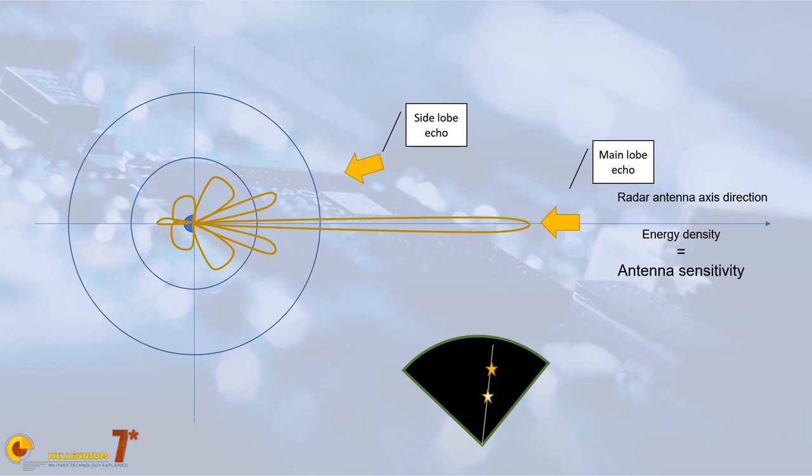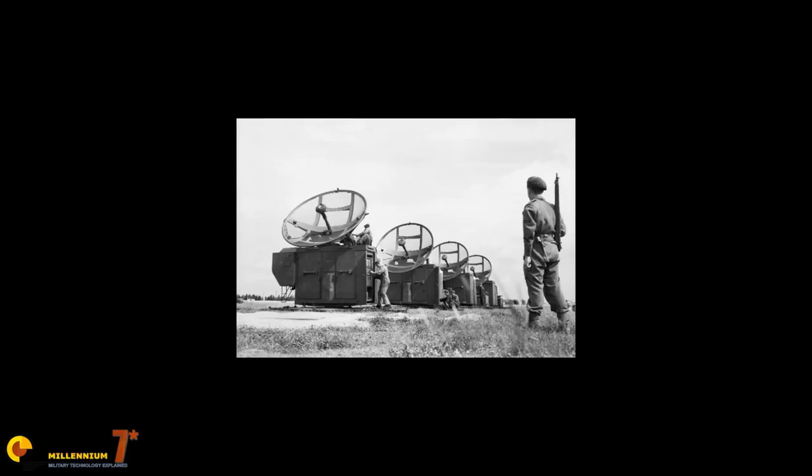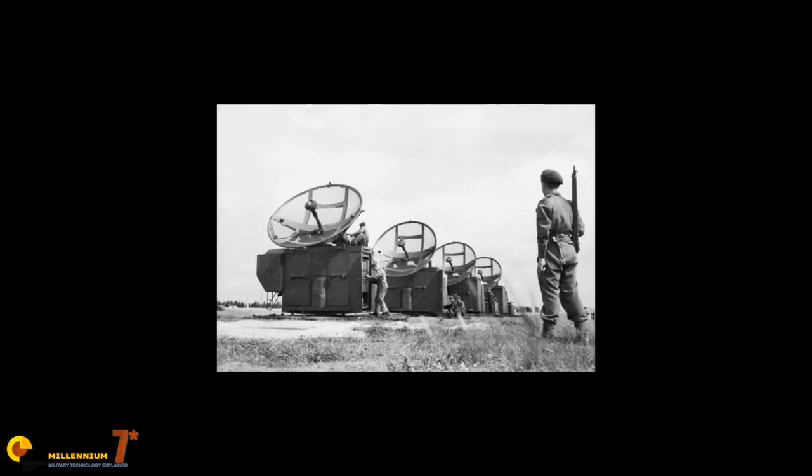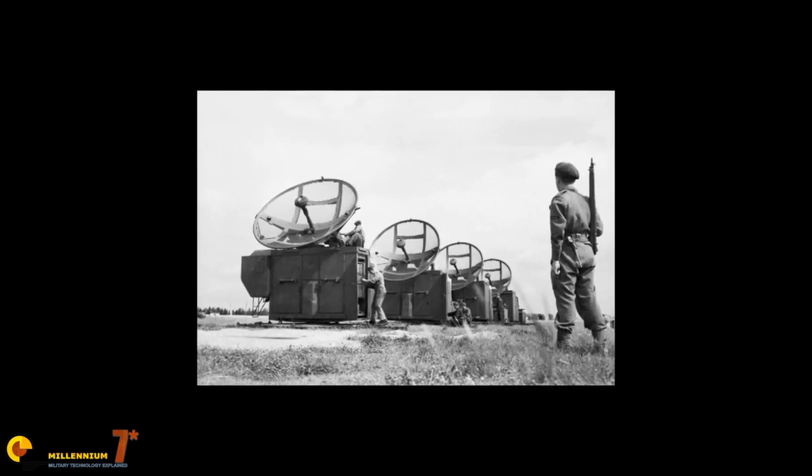Now, since we know the direction of the echo, the direction of the target, from the position of the antenna, from where the antenna is pointed to, we have no real way of telling between the signal coming from the main lobe and the signal coming from the side lobe. This is not entirely true.